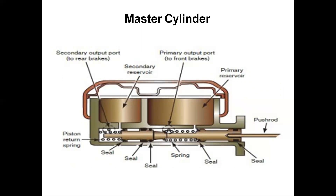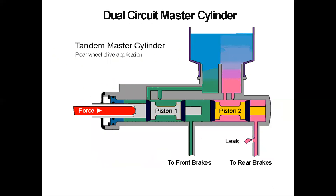The constructional details of the master cylinder include: secondary output port, secondary reservoir, primary output port, primary reservoir, push rod, piston, seals, and piston return spring. The dual circuit master cylinder uses two pistons to pass a high amount of fluid so brakes are applied very quickly — one piston-cylinder connects to the front brake system and another to the rear brakes.